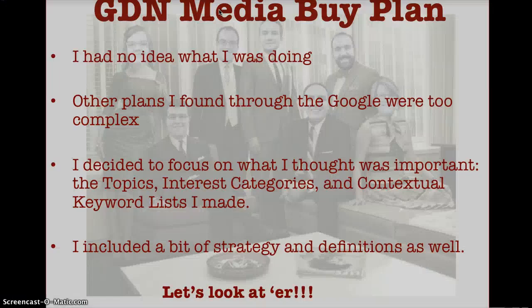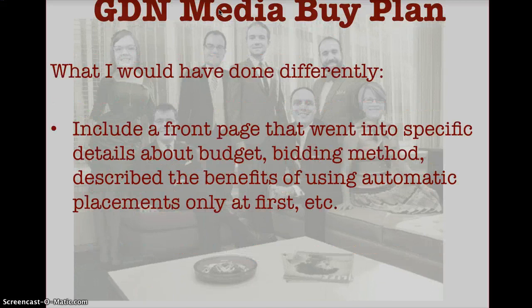Here's what I would have done differently after finishing it and talking with the client. I would have included a front page with specific details about budget — how I was going to divide it up equally between all campaigns and do the math to make sure daily budgets aligned with their monthly spend. They didn't know that, so I should have explained it. Also, I should have covered the bidding method — CPC versus CPM — and described the benefits of using automatic placements only at first, since they had a lot of questions about why I wouldn't use Ad Planner to pick managed placements.